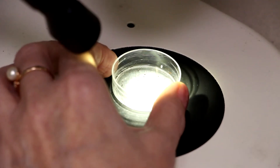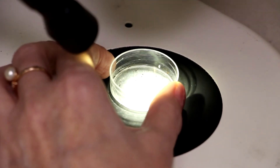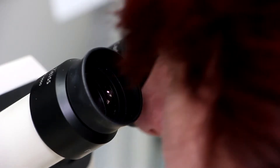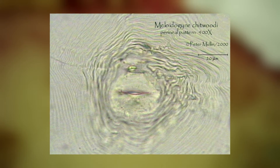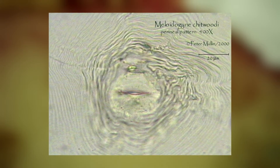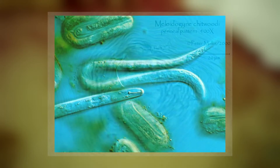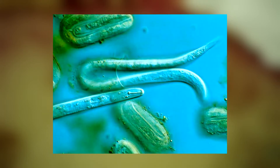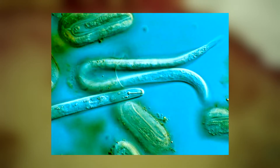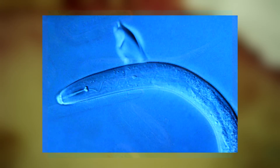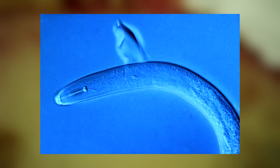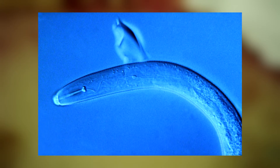При определении связи между нематодой и растением-хозяином возникают трудности, так как популяции мелодогина фалокс могут быть смешаны с популяциями мелодогина читвуди. Впрочем, существуют некоторые морфологические и морфометрические различия между этими двумя видами.